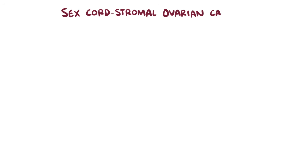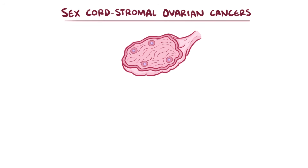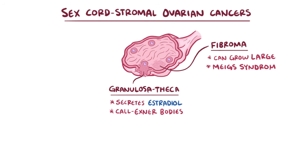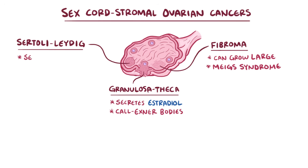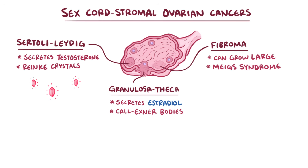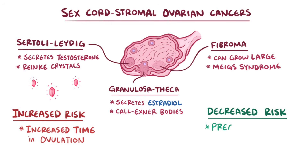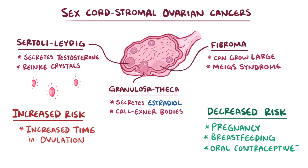As a quick recap, sex cord stromal ovarian cancers originate from connective tissue in the ovary. Granulosa theca cell tumors can secrete excess estradiol and develop Call-Exner bodies. Fibromas can become large and are associated with Meigs syndrome. And Sertoli-Leydig cell tumors can secrete excess testosterone and develop Reinke crystals. Increased risk for developing ovarian cancers is associated with an increased cumulative amount of time a woman spends in ovulation, and therefore decreased risk is associated with pregnancy, breastfeeding, and oral contraceptives.